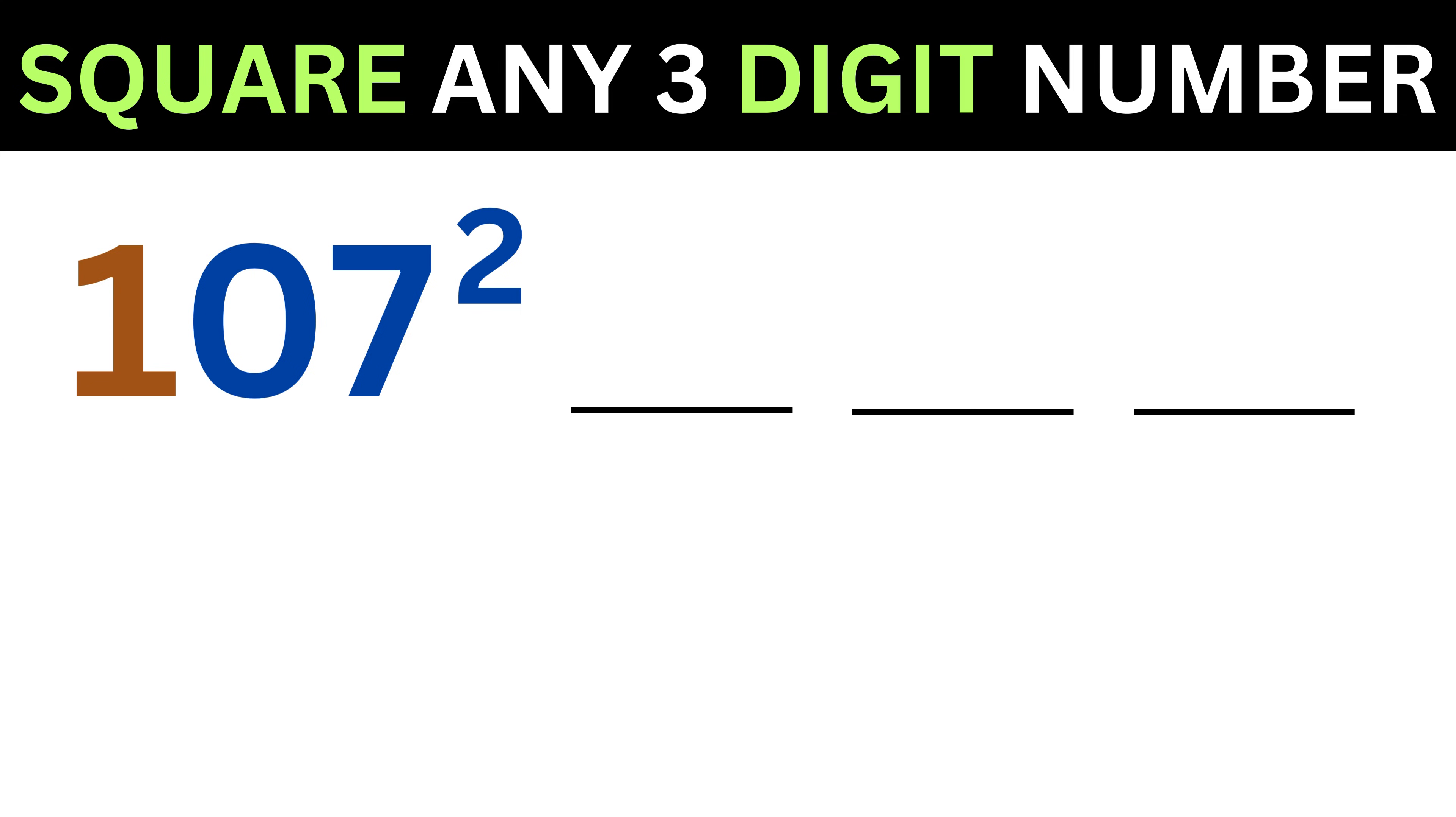Then we will divide our answer into three parts. Now take the first part of our number, which is this 1, and then square it. We get 1, so put it here.